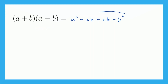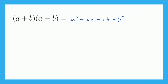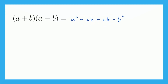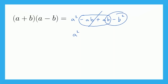Look at this polynomial now. Do we have any like terms? Yes, we do. This right here is like saying minus one ab, and this right here is like saying plus one ab. So those are like terms. When we have negative one plus one, that's zero, so these two terms cancel. And we're just left with a squared minus b squared. So our final answer is a squared minus b squared, and we cannot simplify that anymore.